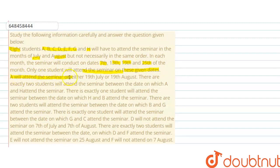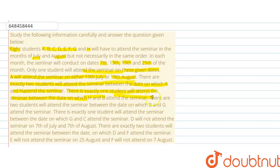A will attend the seminar on either 19th of July or 19th of August. There are exactly two students who will attend the seminar between the dates on which A and H attend. There is exactly one student who will attend the seminar between the dates on which H and B attend. There are two students who will attend the seminar between the dates on which B and G attend.